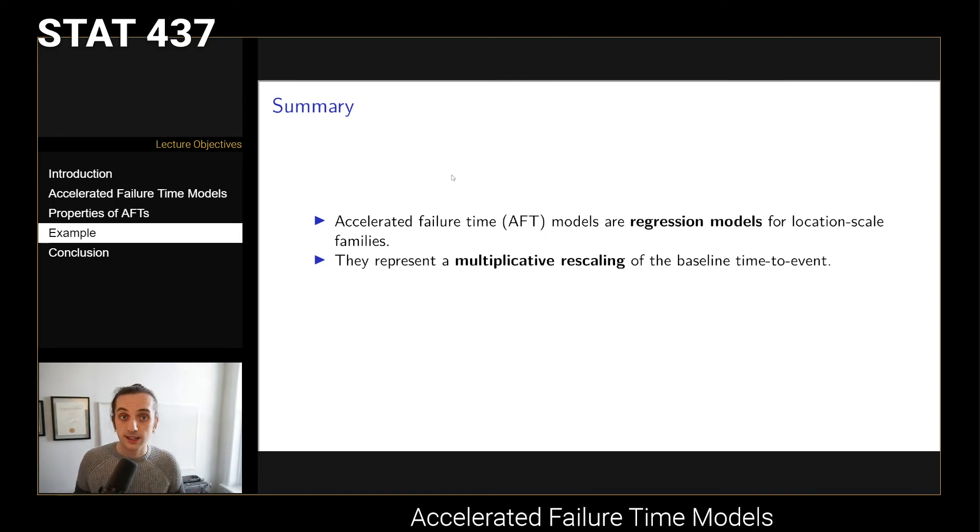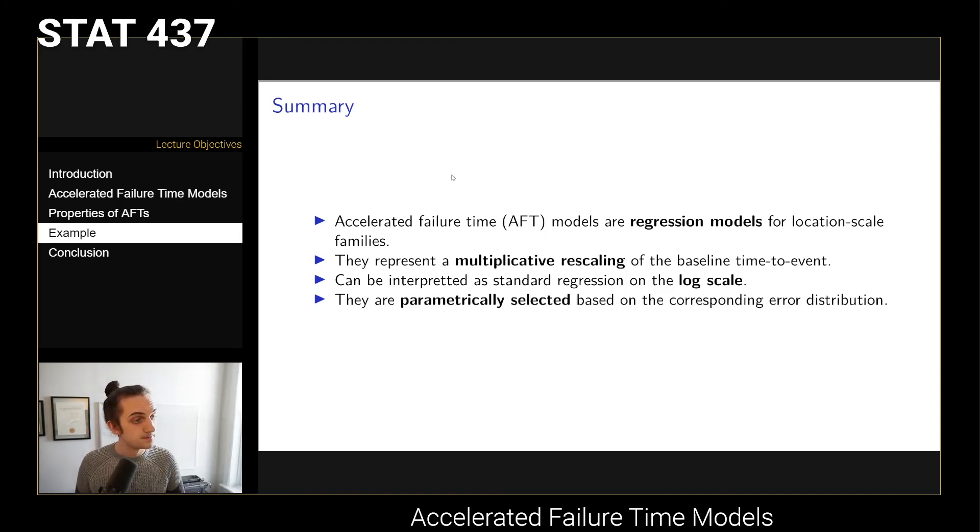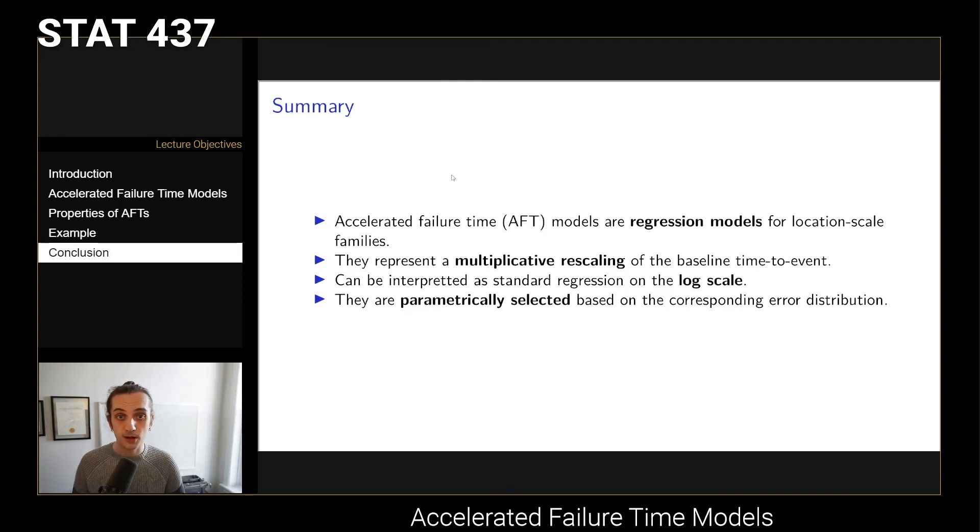AFTs are regression models for location scale families. They represent a rescaling of the baseline time to event. If you have covariates that make that term scale it up or down, you can think about that as shifting the amount of time that something is going to survive. They're a standard regression on the log scale, and you can parametrically select them based on a corresponding error distribution. You can either set the distribution of T and it gives you a distribution of W, or you can set the error distribution of W and that will imply some distribution for T.